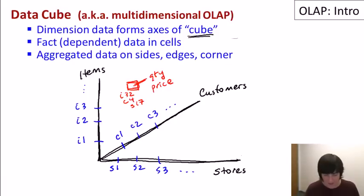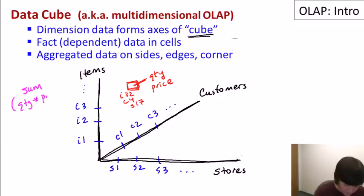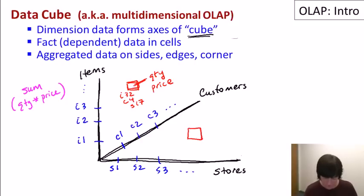So that's what we have in the whole central area of the cube. So now on the faces, edges and corner of the cube, we're going to have aggregated data. And there does need to be with each data cube a predefined aggregate function. So for this one, let's say that what we want as our aggregate is the sum of the quantity times the price. So we're going to figure out the total amount that we're making for different combinations of stores, items and customers.